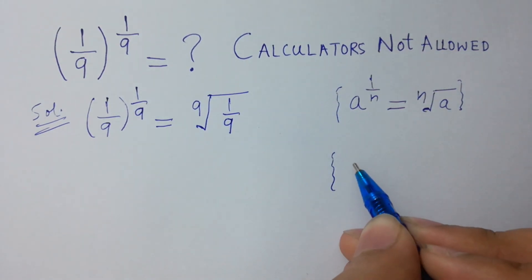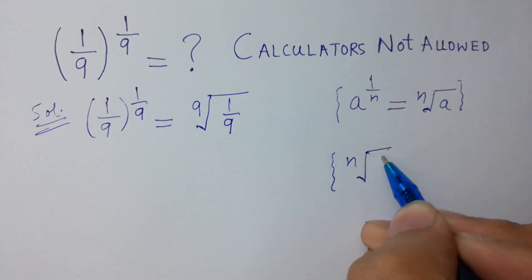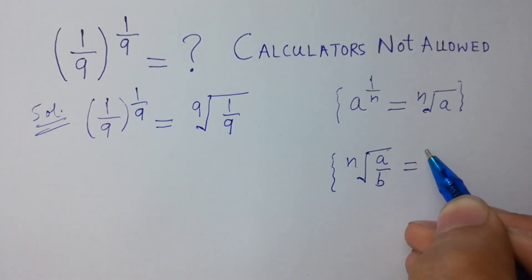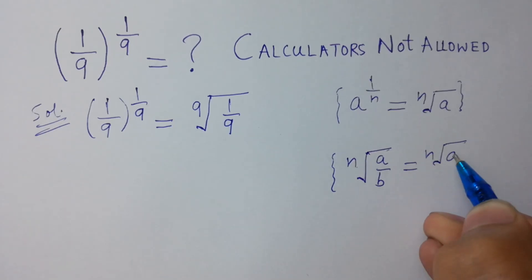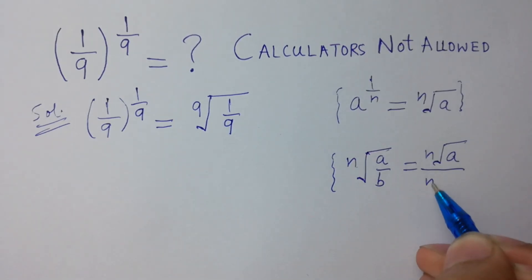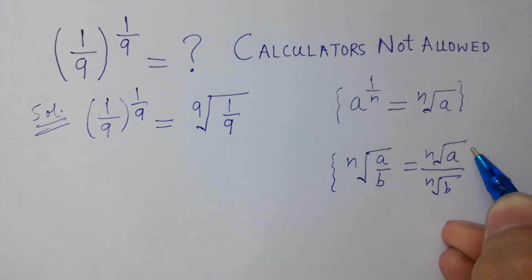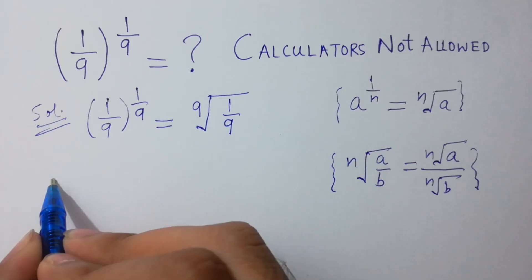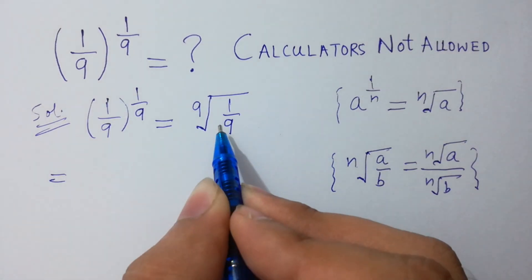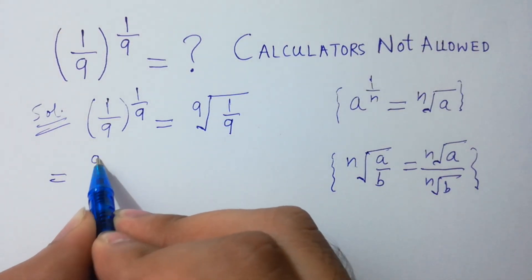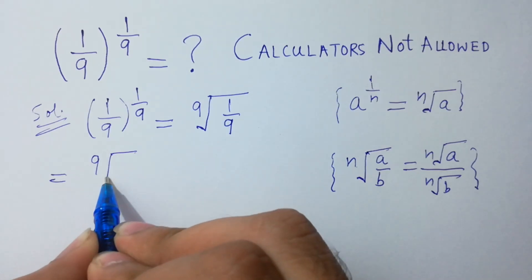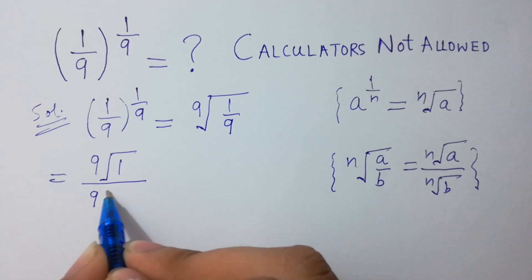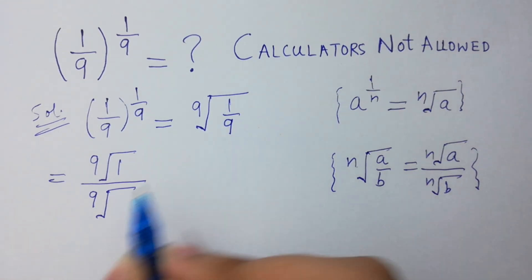Since the n-th root of a over b equals n-th root of a over n-th root of b, so it will be equal to 9th root of 1 over 9th root of 9.